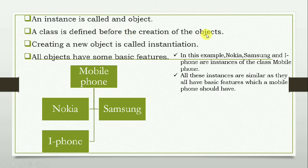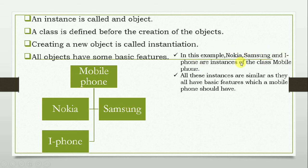An instance is called an object, or you can say an object is the instance of a class. A class is defined before the creation of objects — first the class will be defined, then the object of that class will be created. Creating a new object is known as instantiation. For example, in the class mobile phone, Nokia, iPhone, and Samsung are instances of the class mobile phone, and all these instances share the basic features a mobile phone should have.